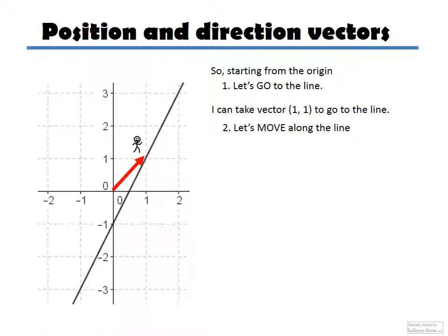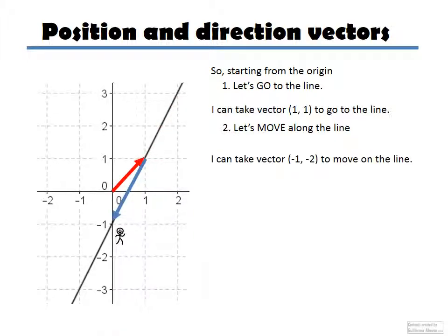So now let's move along the line. What can I do? Well, I have to find a vector that moves along this line. Vector (-1, -2) moves along the line, and now I made it here. So there you go.